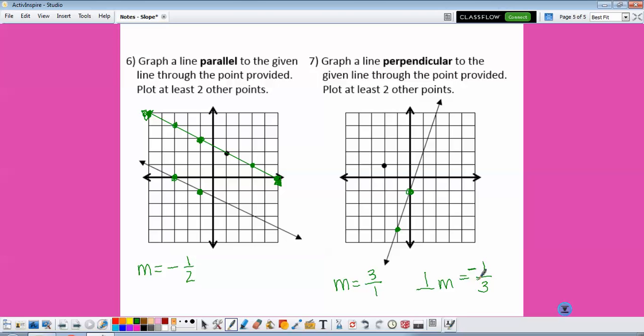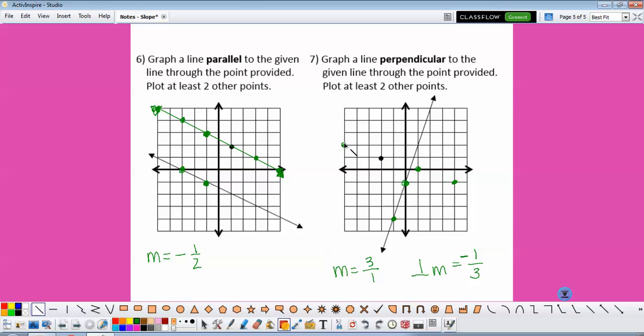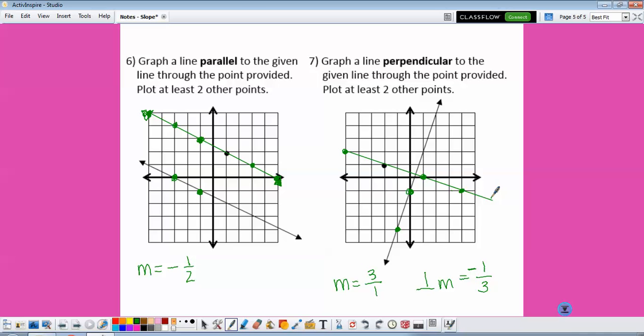So from the given point, we're going to go down 1 over 3, down 1 over 3, down 1 over 3. We can also go up and left, and then again connect our dots. That's all for today. Fill in your summary.